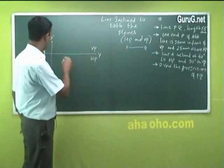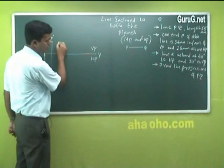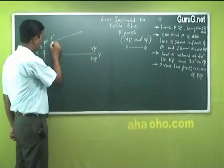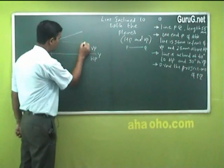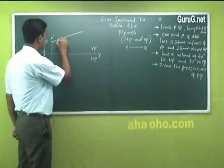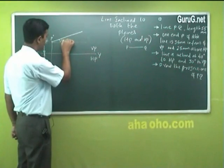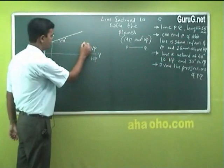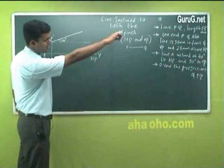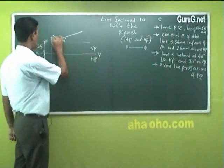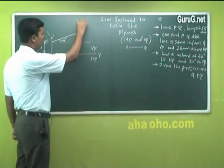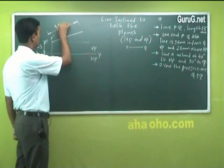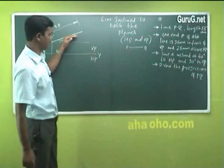The line is inclined at 40 degrees to HP — I will say this line is 40 degrees to HP — P is here and the other end will be Q. This angle is 40 degrees. You write a straight line — a thicker line — the VP line. The line is 40 degrees to HP. This line is 55 millimeters.